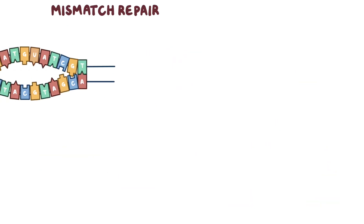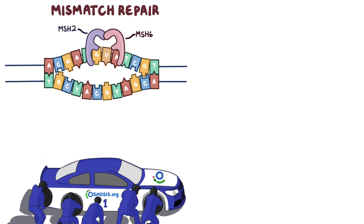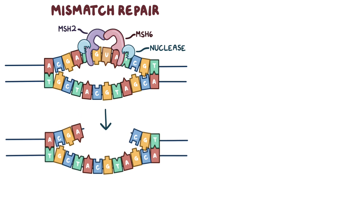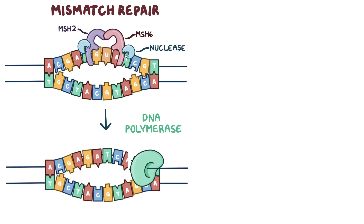In mismatch repair, the mismatch repair proteins MSH2 and MSH6 rush in to fix the DNA before transcription is complete — like the pit crew at a NASCAR race trying to quickly fix a car on lap 40 out of 100. MSH2 and MSH6 recruit nucleases which remove the uridine and several adjacent nucleotides from the DNA, and then DNA polymerase comes in to replace the nucleotides. This process is extremely error-prone and tends to introduce mutations into the DNA.